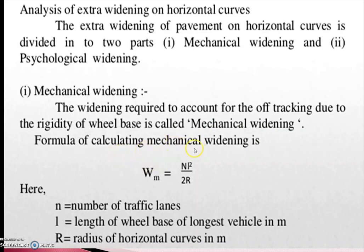The formula for calculating mechanical widening is Wm = NL²/2R, where N is the number of traffic lanes (whether single lane, double lane, etc.), L is the length of the wheelbase of the longest vehicle in meters — that is, the distance from the front wheel to the last wheel — and R is the radius of the horizontal curve in meters.